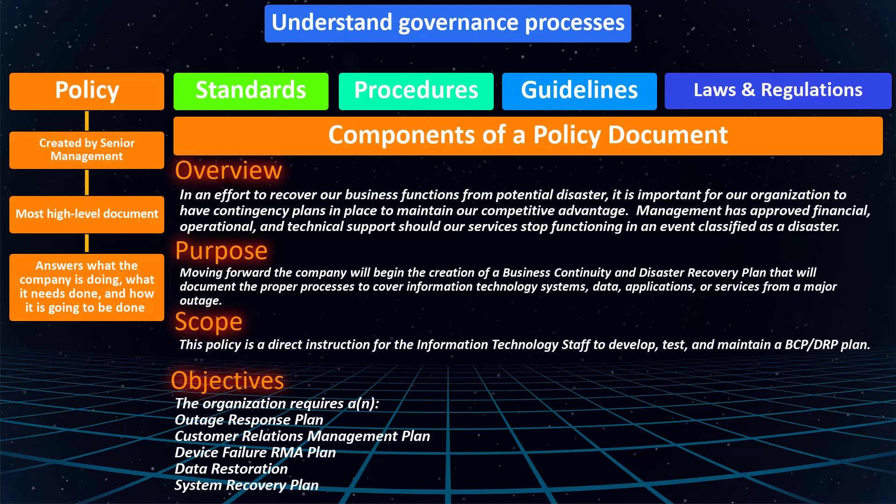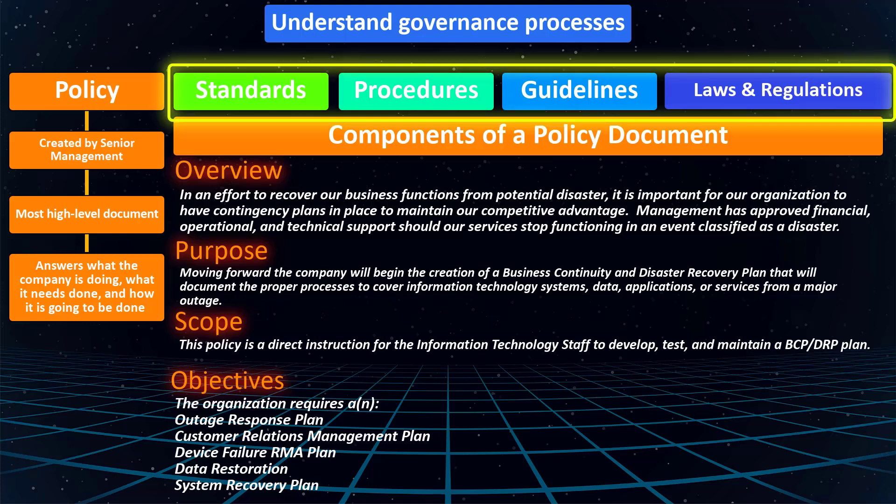Notice that a policy doesn't specifically mention how to protect or recover systems, how to manage customer relations, or who specifically is responsible for each item. All of that happens in the supporting documents that work to uphold the policy — which are procedures, standards, baselines, laws, and regulations documents that we will learn about next.